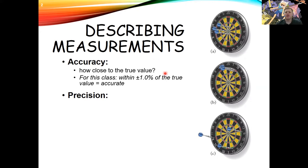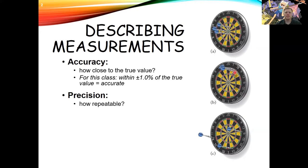Precision is something very different from accuracy. Precision is a question of how repeatable a measurement is. In dartboard B, all the darts are clumped right next to each other, so that dart thrower is more precise than dartboard A, where the darts are all spread apart. The darts in dartboard A are more accurate but less precise than dartboard B. Dartboard C is just all over the place.